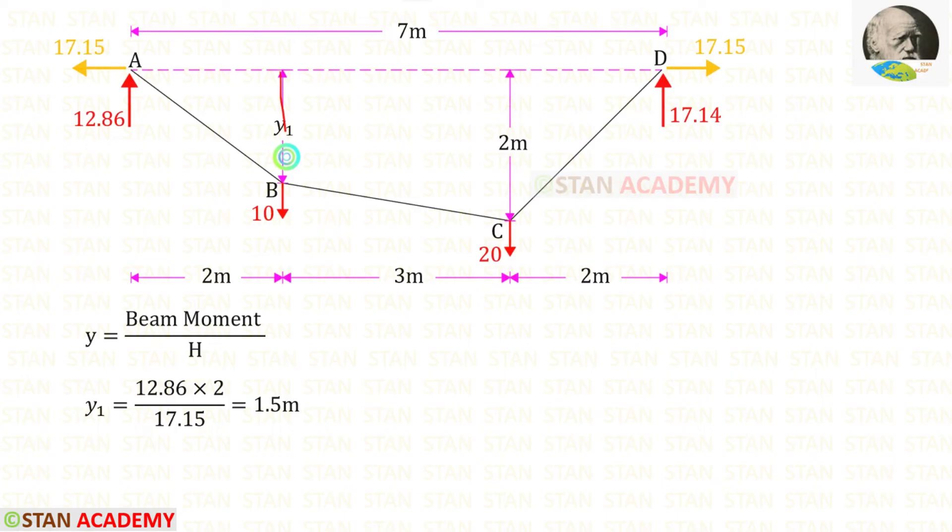Now let us find the dip Y1. At point B let us find the beam moment. This reaction is acting in the clockwise direction so it will be positive and the distance is 2. Just before we have found H which is 17.15. Finally for Y1 we will get 1.5 meters.